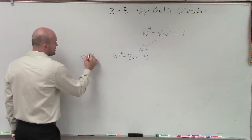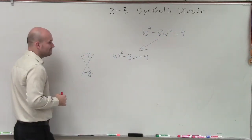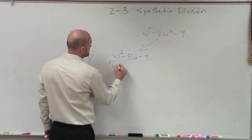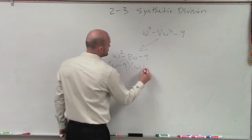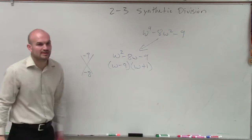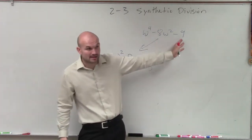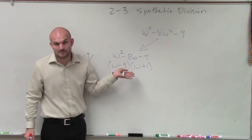All right, well, two numbers multiplied to give me negative 9, adds to give me negative 8. Okay, that's going to be w minus 9 times w plus 1. Would everybody agree that's the factored form for that? We haven't done this problem yet, but that's the factored form for that, right?